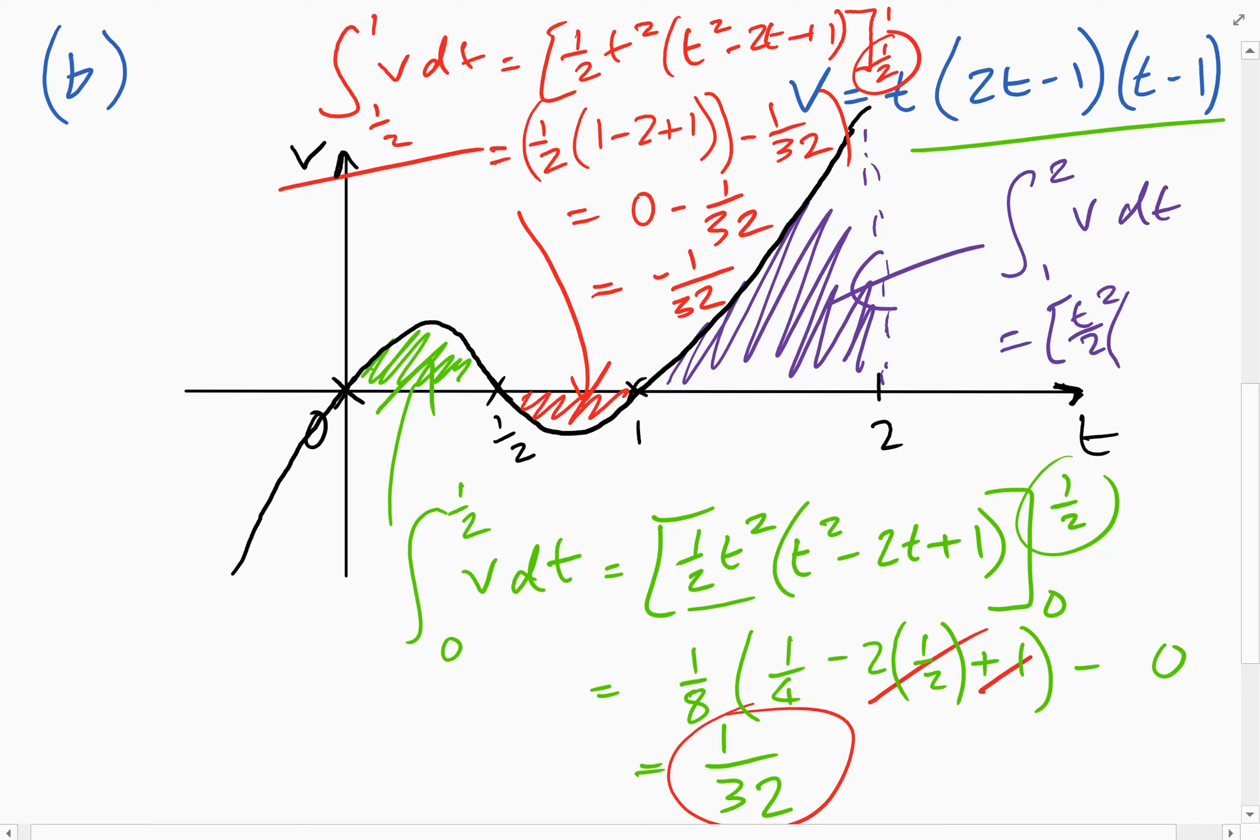So I'll just do it one more time. So half t squared times t squared minus 2t plus one. And this time we're going from one to two. And so if we put a two in here, if we put a two in here, what's that going to give? That's going to give four over two. So that'll be two. And then we've got two squared, which is four minus another four plus one. So that is going to give us plus two. And then when we put a one in, we already know when we put a one in, we get zero. We did it over here. So it's two minus zero. So it's two.